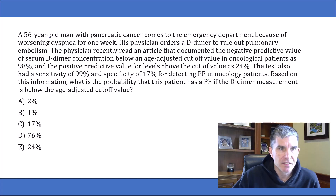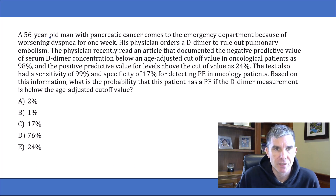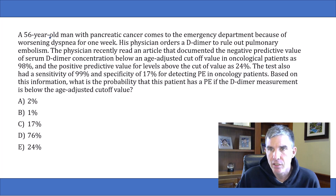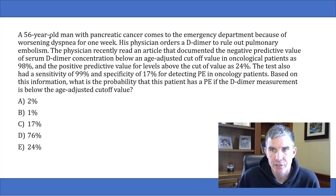The question says: a 56-year-old man with pancreatic cancer comes to the emergency department because of worsening dyspnea for a week. His physician orders a D-dimer to rule out pulmonary embolism. The physician recently read an article documenting the negative predictive value of serum D-dimer concentration below an age-adjusted cutoff value in oncological patients as 98%, and the positive predictive value for levels above the cutoff value as 24%. The test also had a sensitivity of 99% and a specificity of 17% for detecting PE in oncology patients.